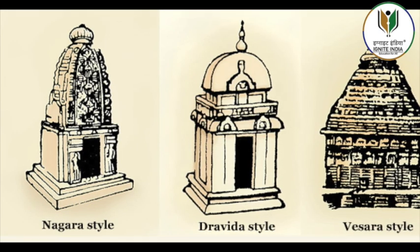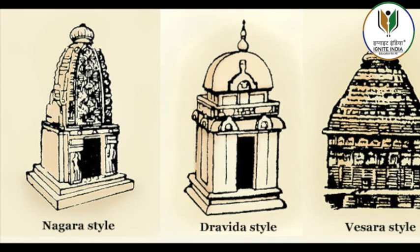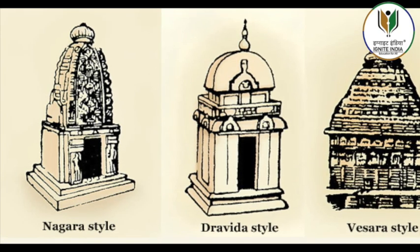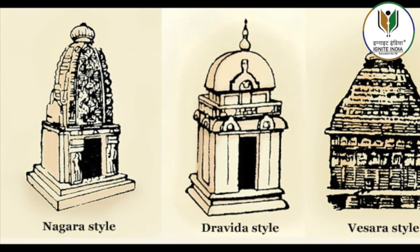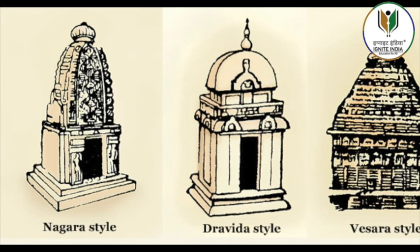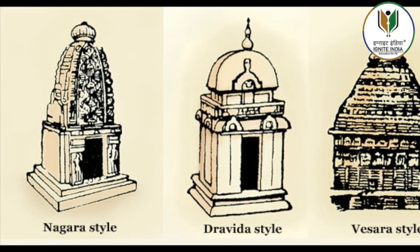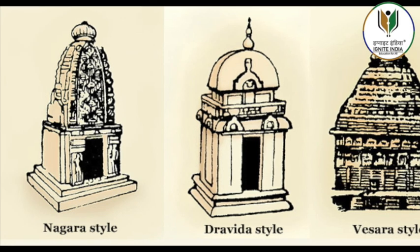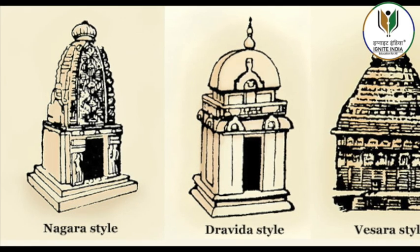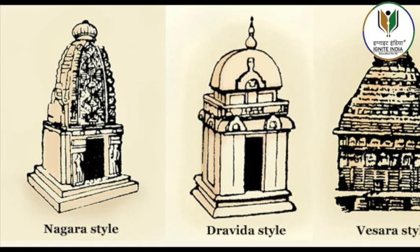Most of the main temple sites are located in ancient Kalinga, modern Puri district, including Bhubaneshwar or ancient Prabhuvanesvara, Puri and Konark. In general, the shikara, called deula in Odisha, is vertical almost until the top when it suddenly curves sharply inwards.